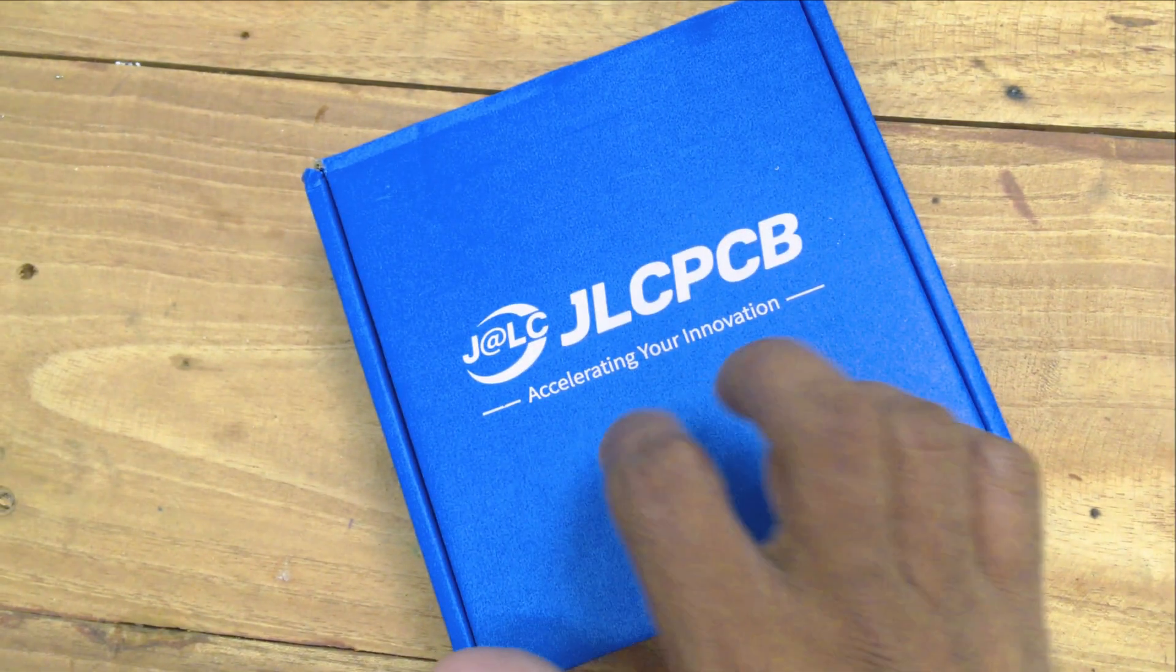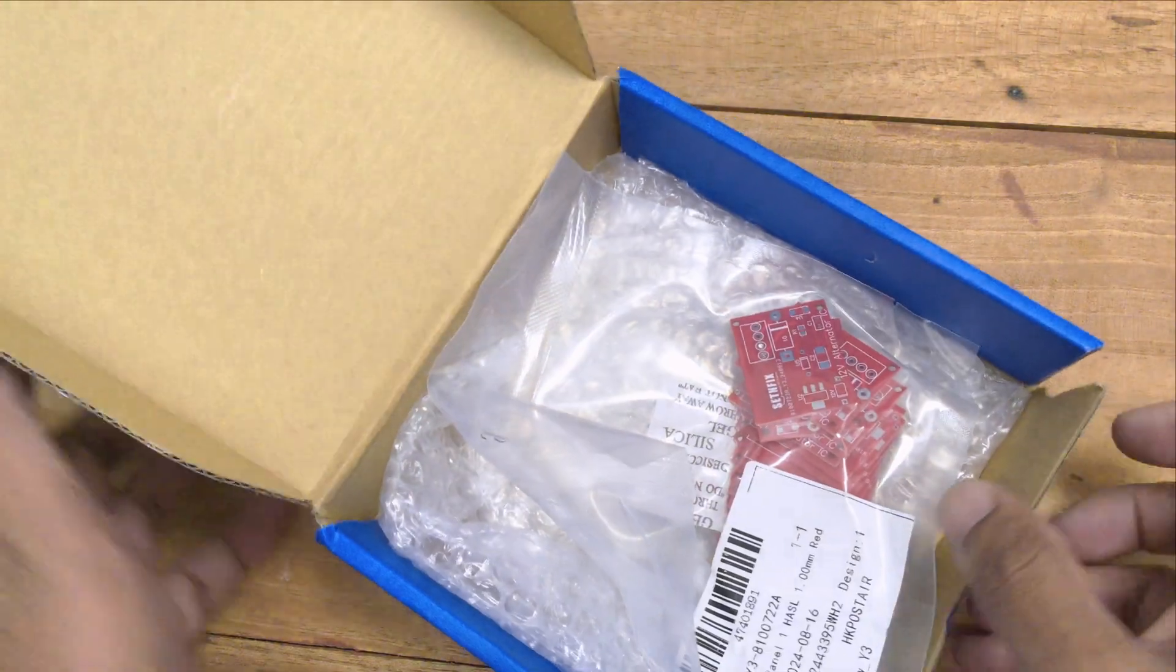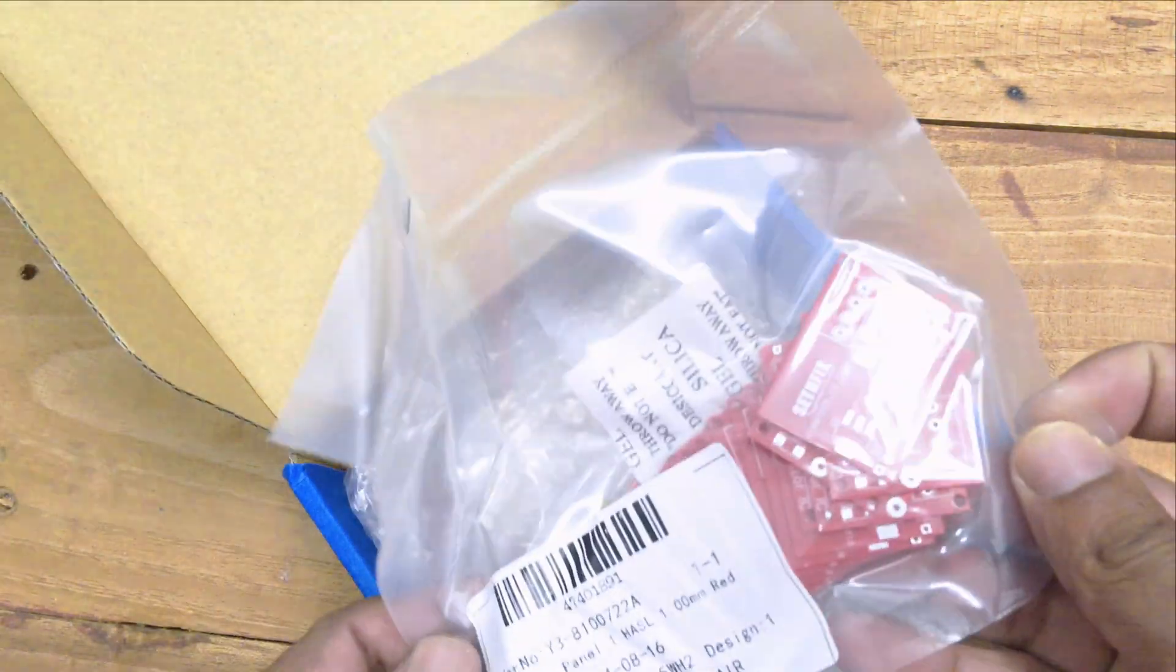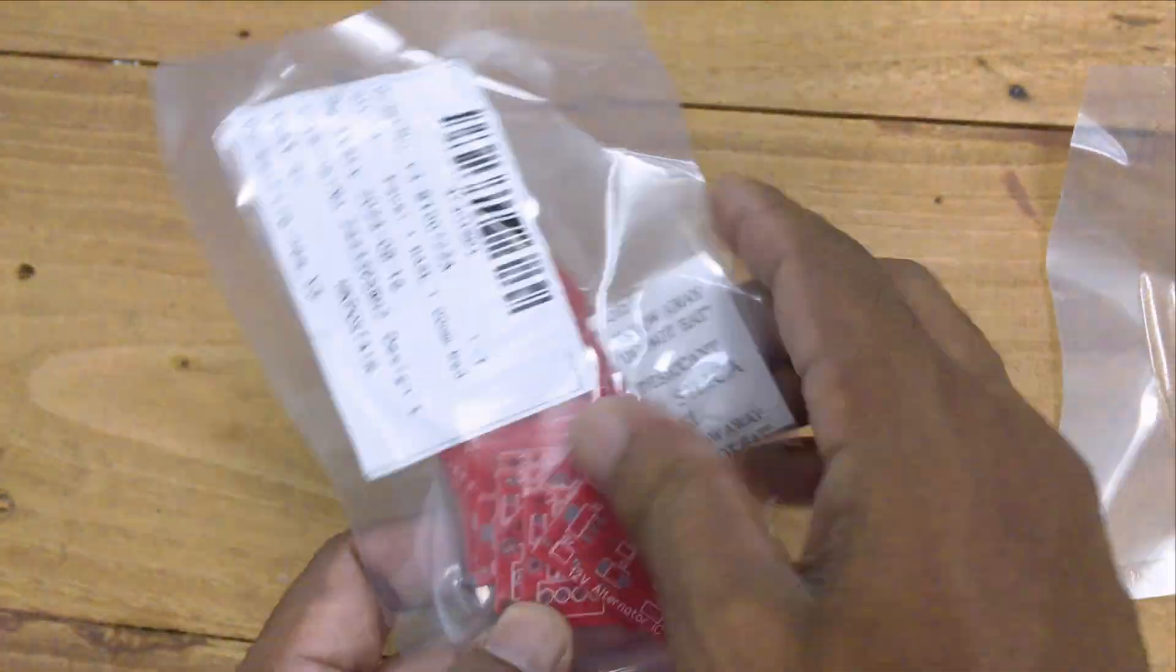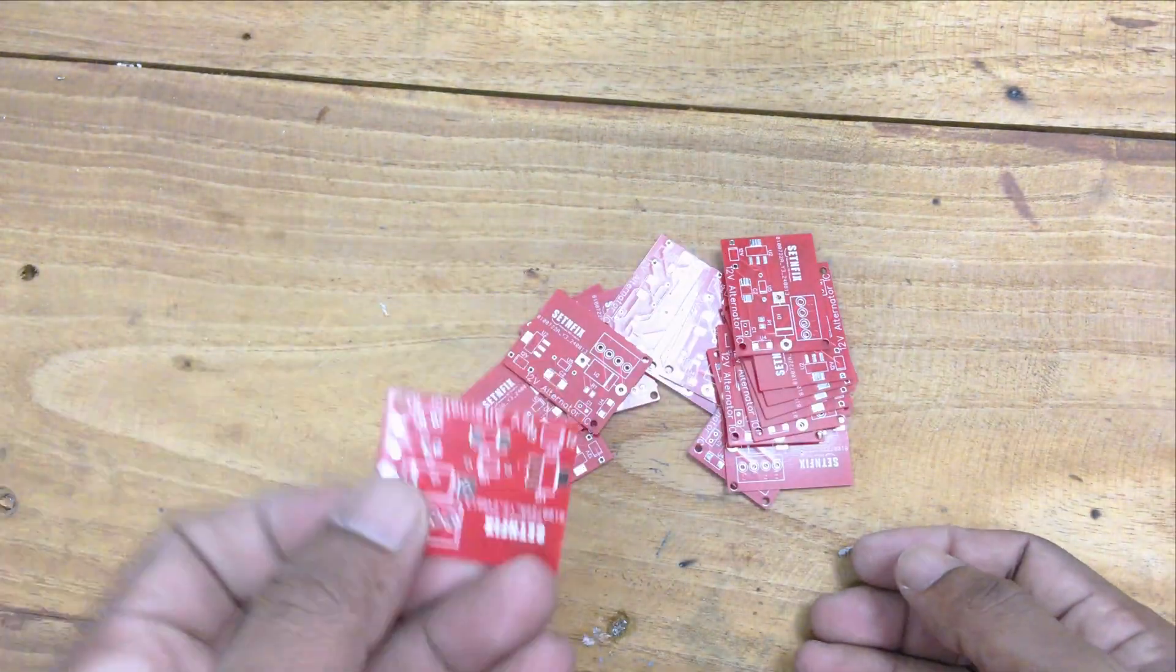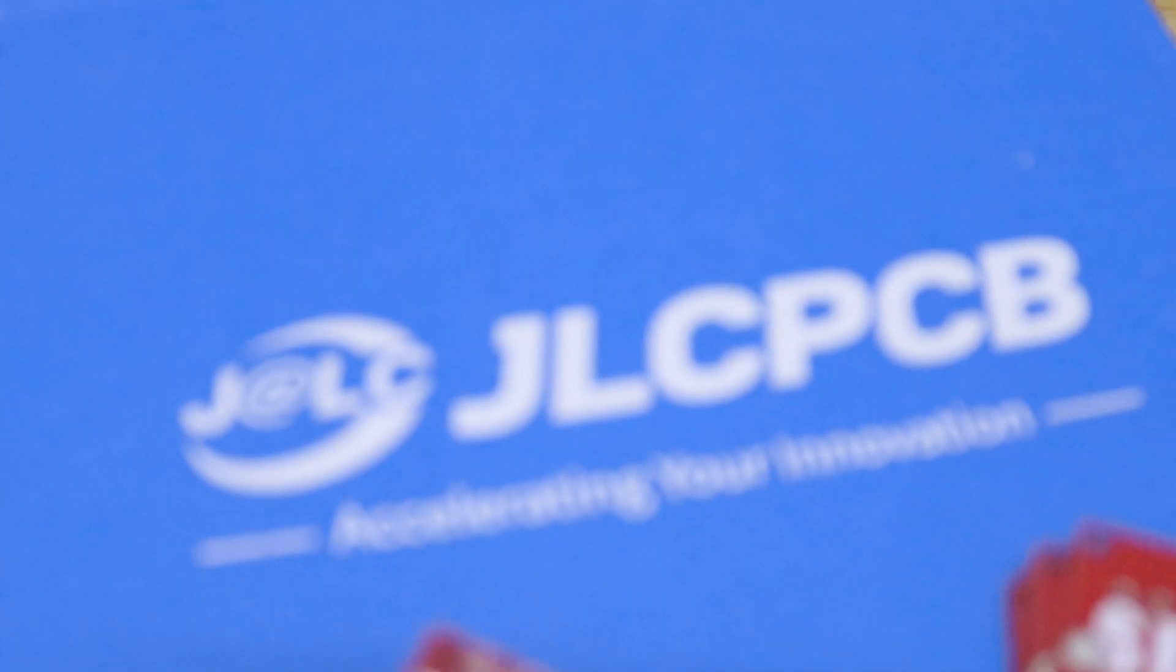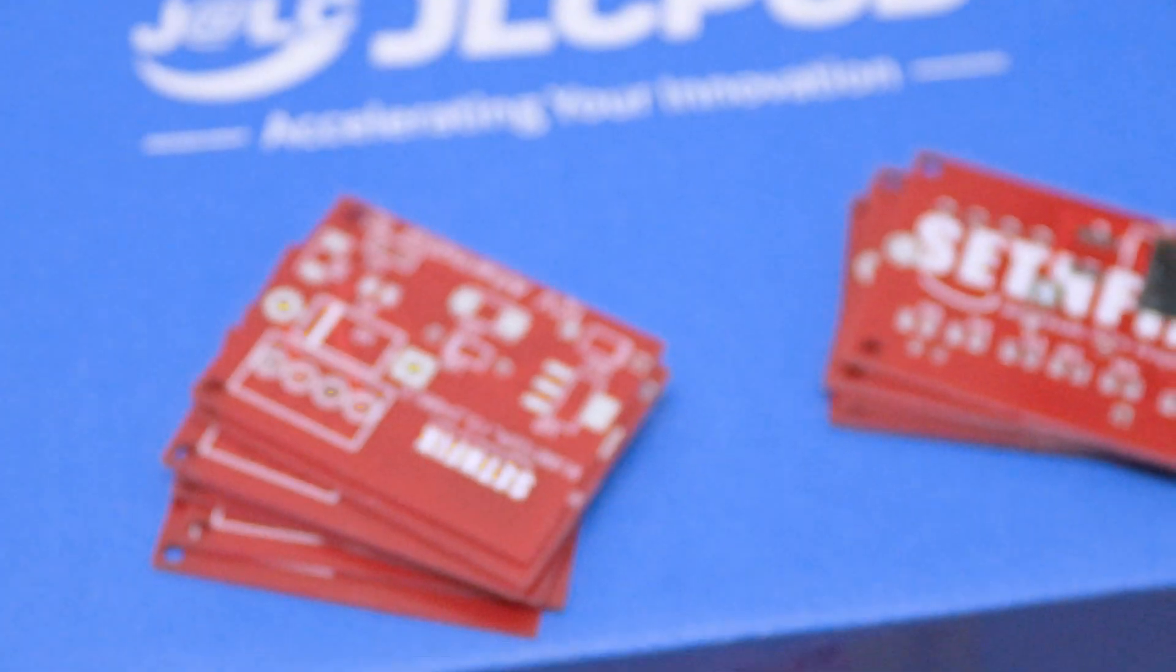A few days later, I received this package from JLCPCB. I needed these PCBs to replace a car alternator IC, and they arrived nicely and securely packed. I ordered around 20 boards using the available coupons. You can get similar coupons when making your own PCBs. Just follow the link in the description to register.